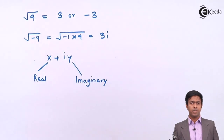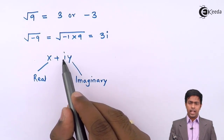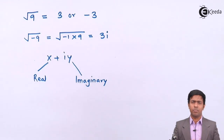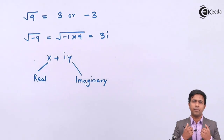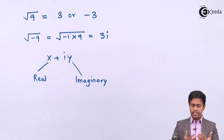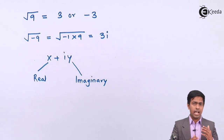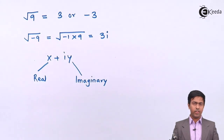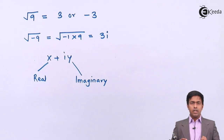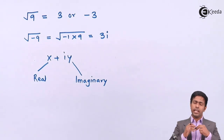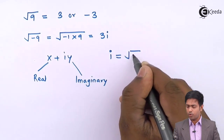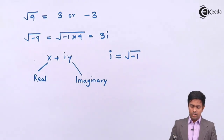The part iy is called the imaginary part because it is always accompanied by the symbol i. So basically a complex number is a combination of a real part and an imaginary part. From our example the answer is 3i, which has an imaginary part but no real part — it is still a complex number. The value of i in a complex number is square root of minus one.